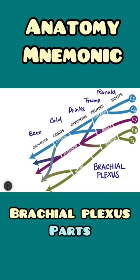Right, now in this: B represents branches, C represents cords, D represents divisions, T represents trunks, and R represents roots. So Ronald Trump drinks cold beer — roots, trunks, divisions, cords, and branches.